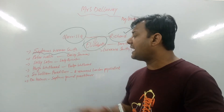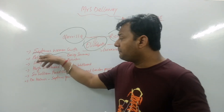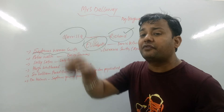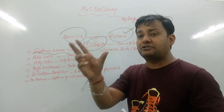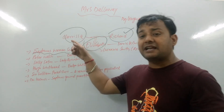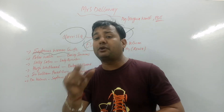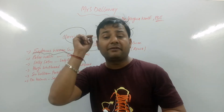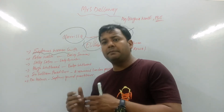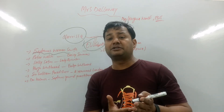And then there is a character called Sally Seton. Sally Seton, Peter Walsh, and Clarissa — they are all good friends. Exactly — they are a bunch of good friends. And Sally Seton and Clarissa were both sexually attracted towards each other when they were young. They really did share some sexual elements too.